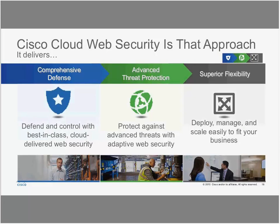When we talk about the features that make up Cisco Cloud Web Security, we can put them into three different pillars. Number one: comprehensive defense — something every web security solution should contain. Number two: advanced threat protection — what defines us compared to our competition. Number three: superior flexibility — referring to how to deploy the solution. It's a cloud solution, so what do you have to do within your organization in order to get this up and running?